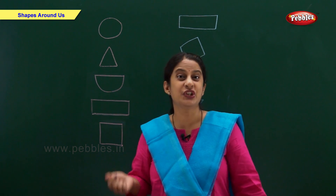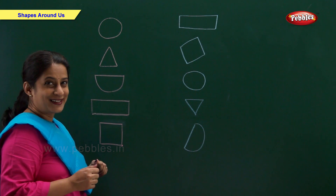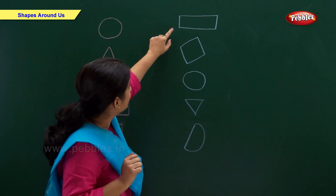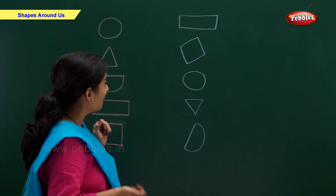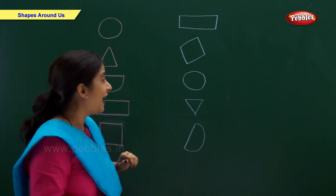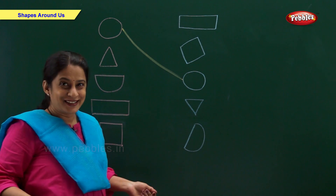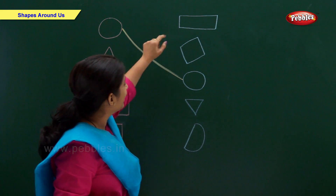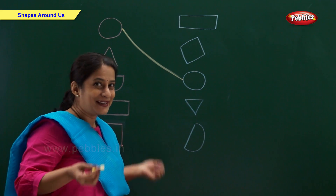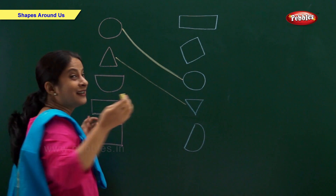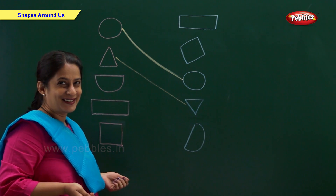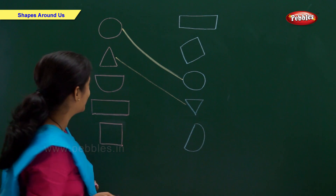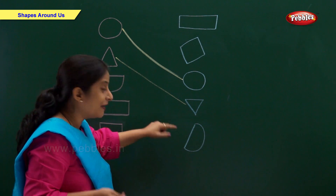Now you have to help me to match the shapes. Which shape is this? Right, it's a circle! So now let's find circle and match. This is a rectangle, this is a square — oh, we found circle, so now let's match. And now we have a triangle, so let's find our triangle — rectangle, square, and a triangle. Which shape is this? Right, it's a semicircle, so let's find semicircle and match.